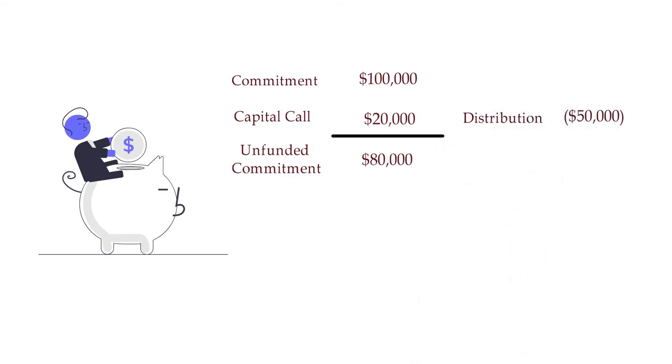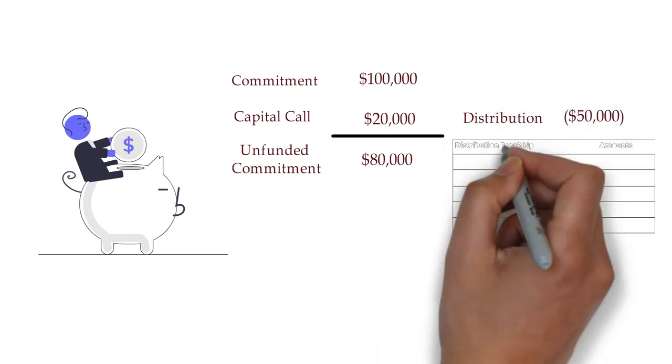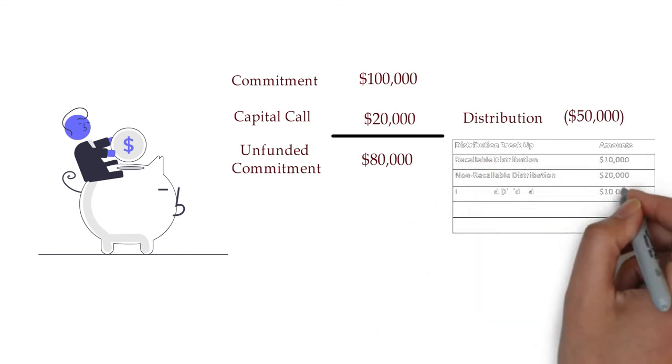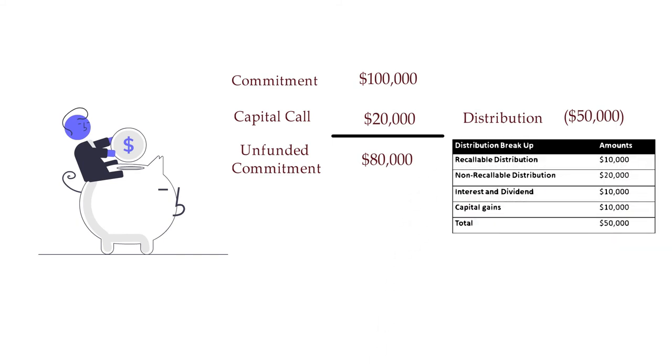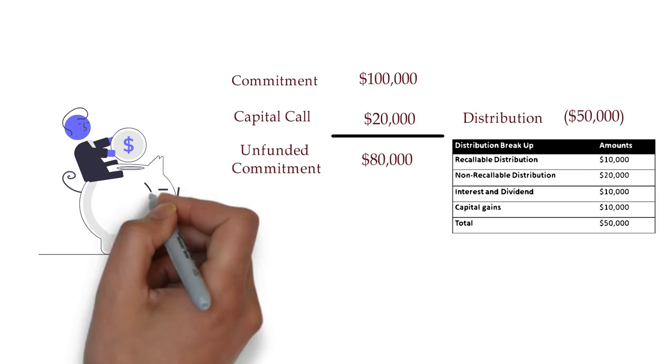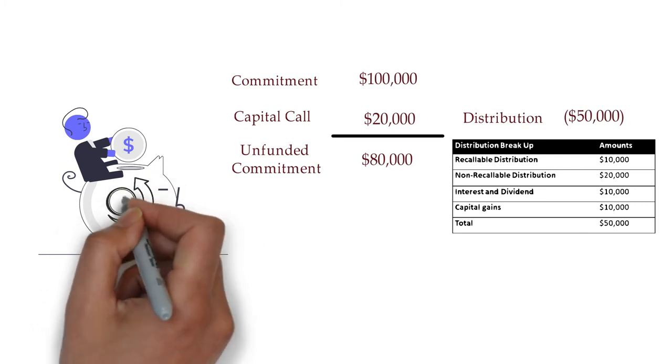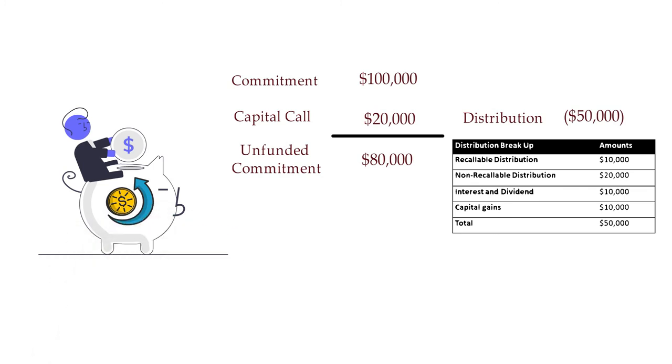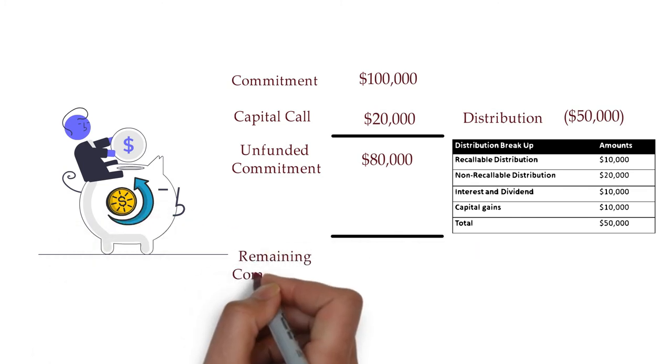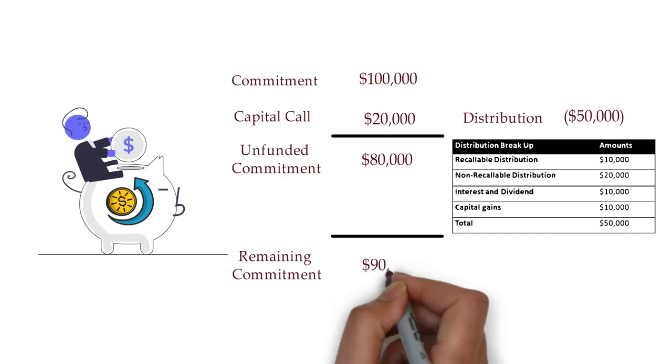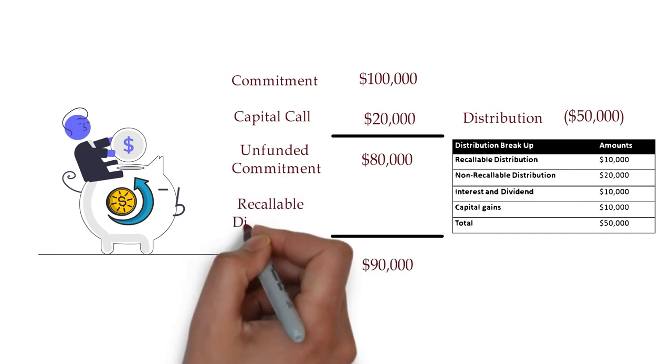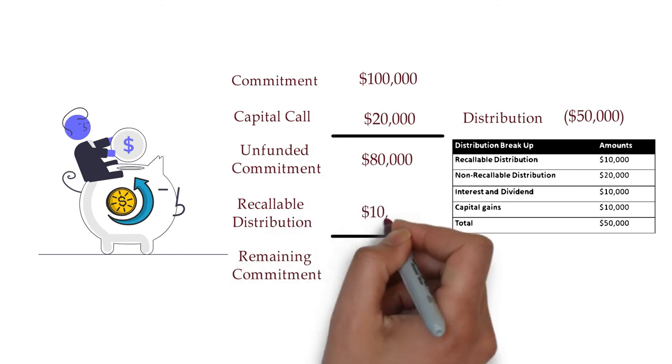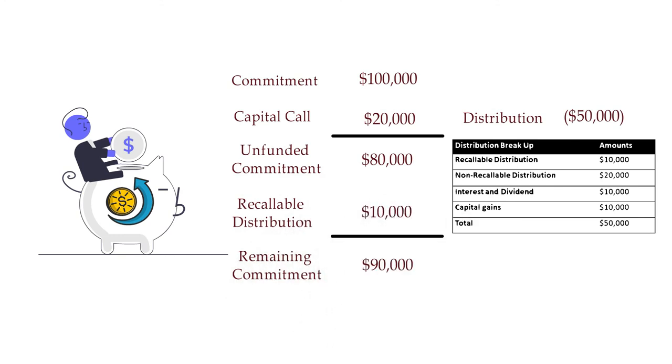The $50,000 comprises of: recallable portion of $10,000, non-recallable portion of $20,000, interest and dividend of $10,000, and capital gain of $10,000. Later the fund transfers the amount of distribution to the limited partners, and their remaining commitment after distribution would be $90,000, as the portion of recallable distribution increased unfunded commitment by $10,000.